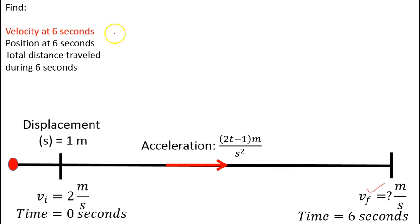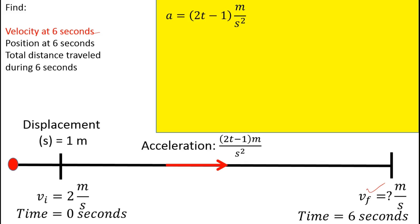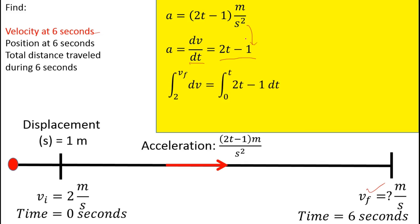Let's work on finding the velocity. We have the acceleration function a = 2t minus 1 meters per second squared. We know that acceleration is the derivative of velocity with respect to time, so we can set dv/dt equal to 2t minus 1. This gives us a separable differential equation. Multiplying both sides by dt, we set up two definite integrals — on the left side, velocity going from 2 meters per second to the final velocity; on the right side, time going from 0 to 6 seconds.